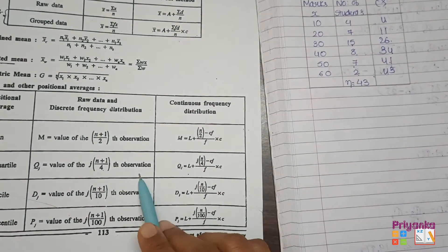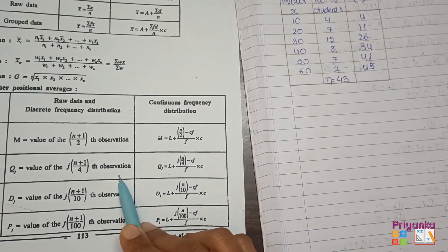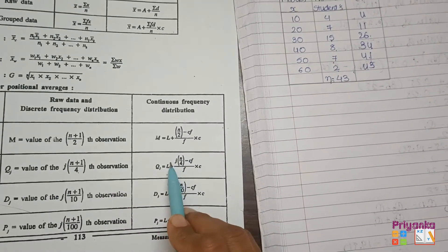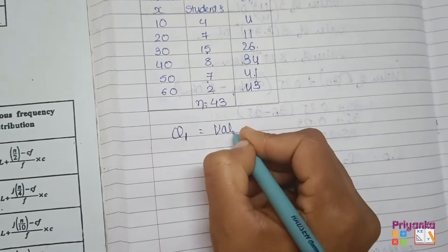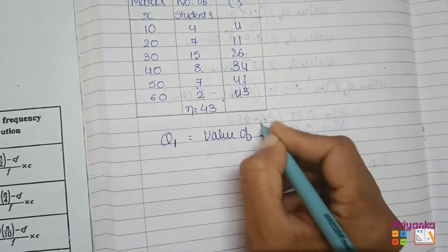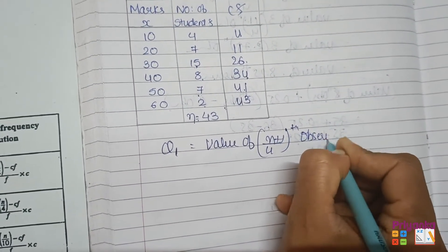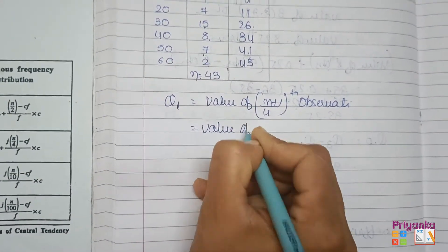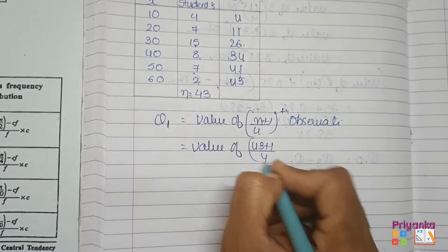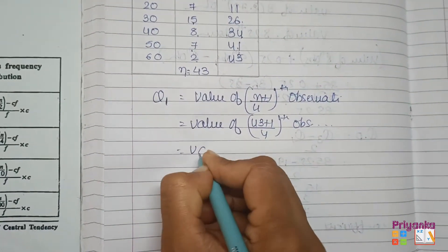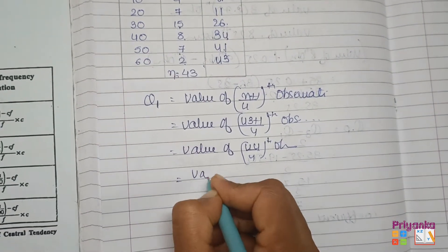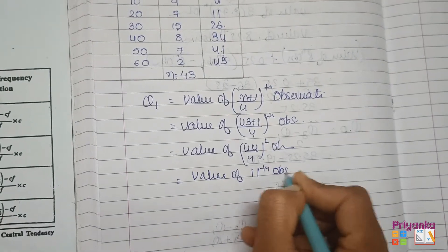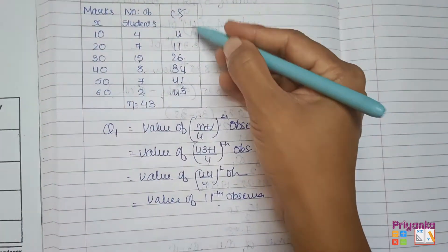Remember, this is a discrete frequency distribution. For Q1 and Q3 in a discrete frequency distribution, we use the formula J(N+1)/4. So for Q1: (43+1)/4 = 44/4 = 11th observation.